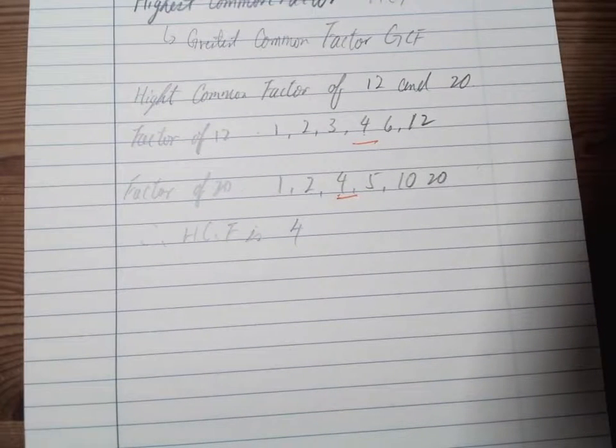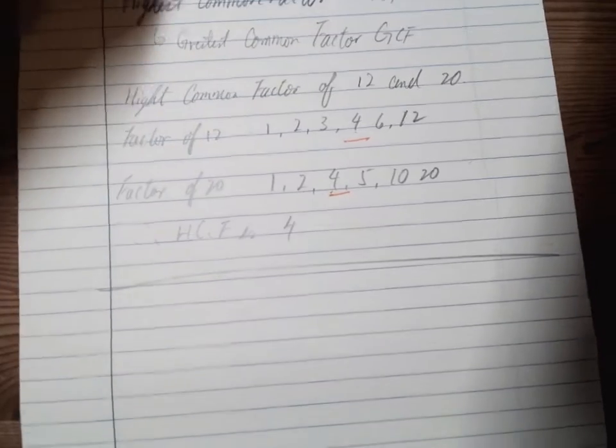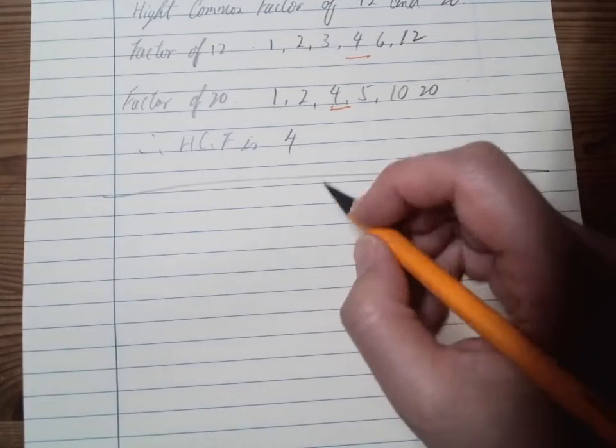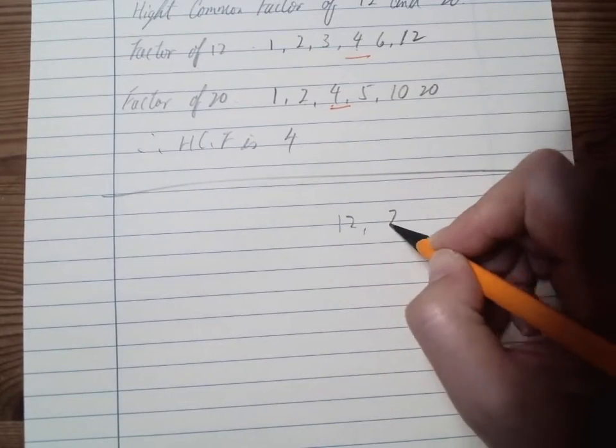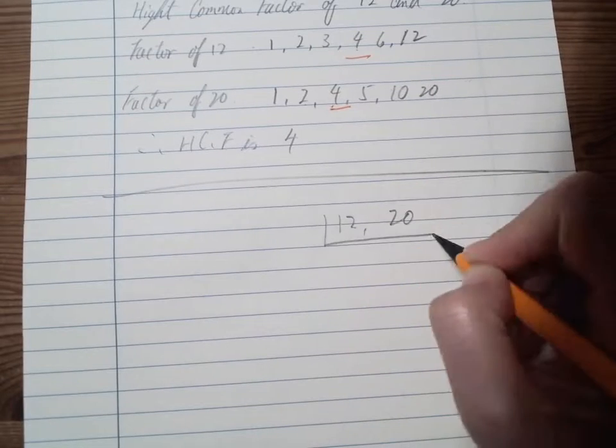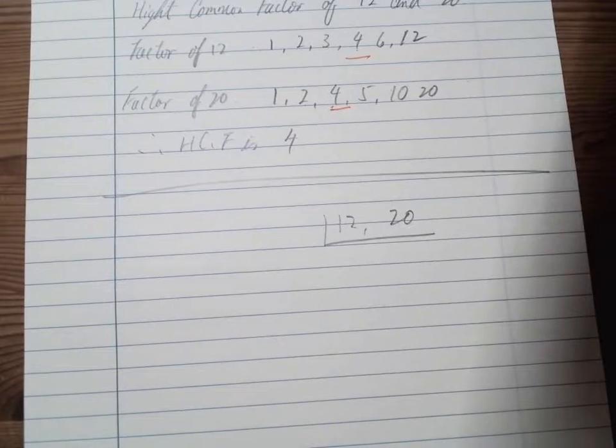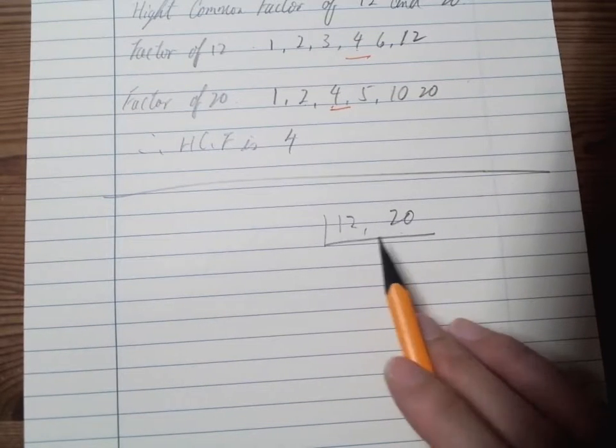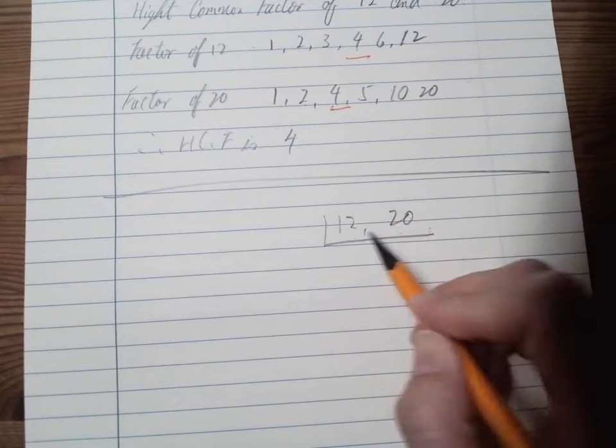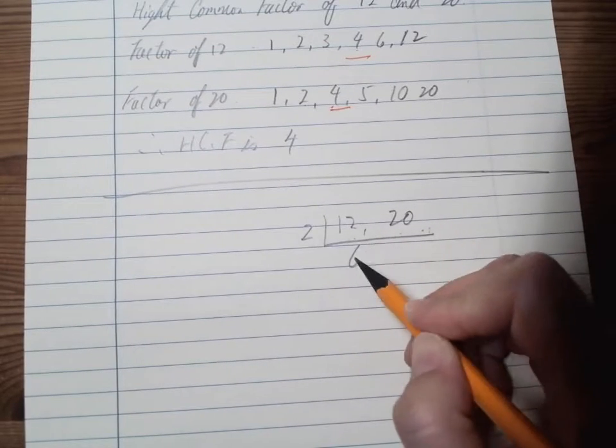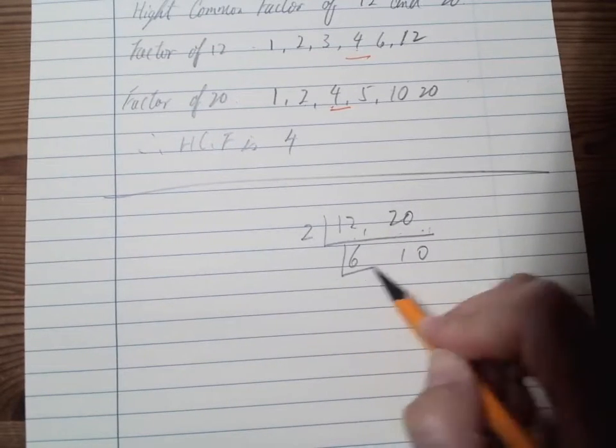And in this video we will also be going through a division method, a short division method. So we're going to do is like 12 and 20. You can do a division here, but then because it's a common factor, it has to be divisible by all the numbers here. So we start with an even number, so with 2, 6 and 10. We can continue to do it.